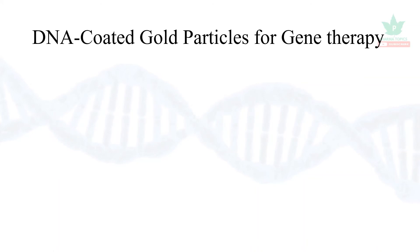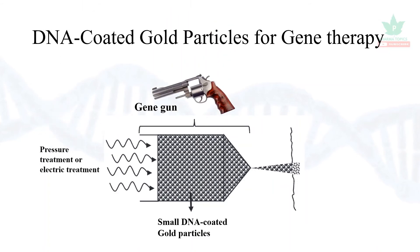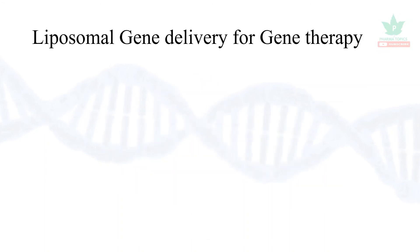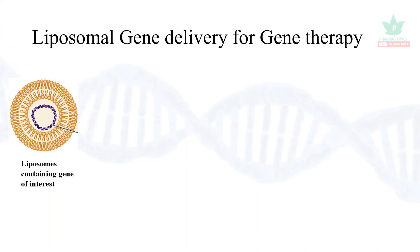The next method is DNA-coated gold particles for gene therapy. Small DNA-coated gold particles are delivered with the help of a gene gun using pressure or electrical treatment, delivering the gene into target tissues such as the skin — it penetrates into the skin. It is suitable for delivery of genes into superficial tissues, but also has the same limitations of short-term gene expression and low efficiency.